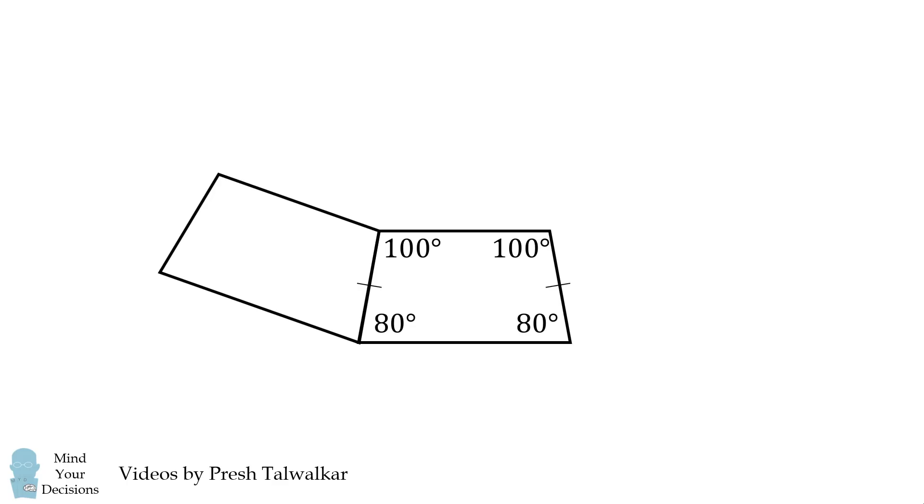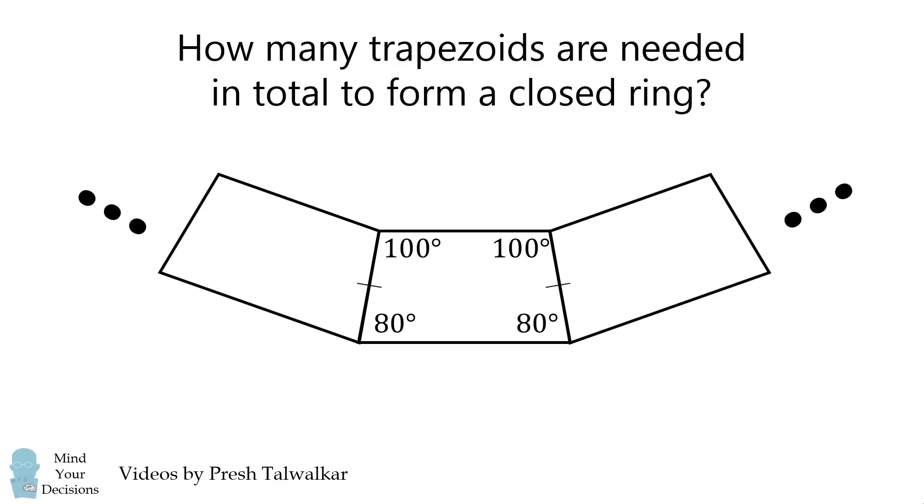Now join congruent trapezoids to form a closed ring. How many trapezoids are needed in total to form a closed ring? This is said to be one of the toughest questions asked on the SAT, which I saw on a thread on Quora.